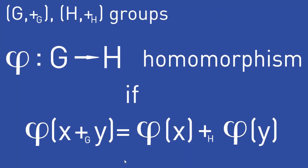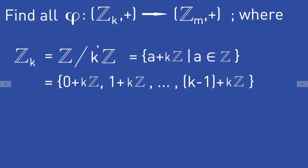A function phi from a group G to a group H is called a group homomorphism if phi of x plus y is equal to phi of x plus phi of y, where plus_G is the operation on the group G and plus_H is the operation on the group H, and this has to be true for all elements x and y in the group G.